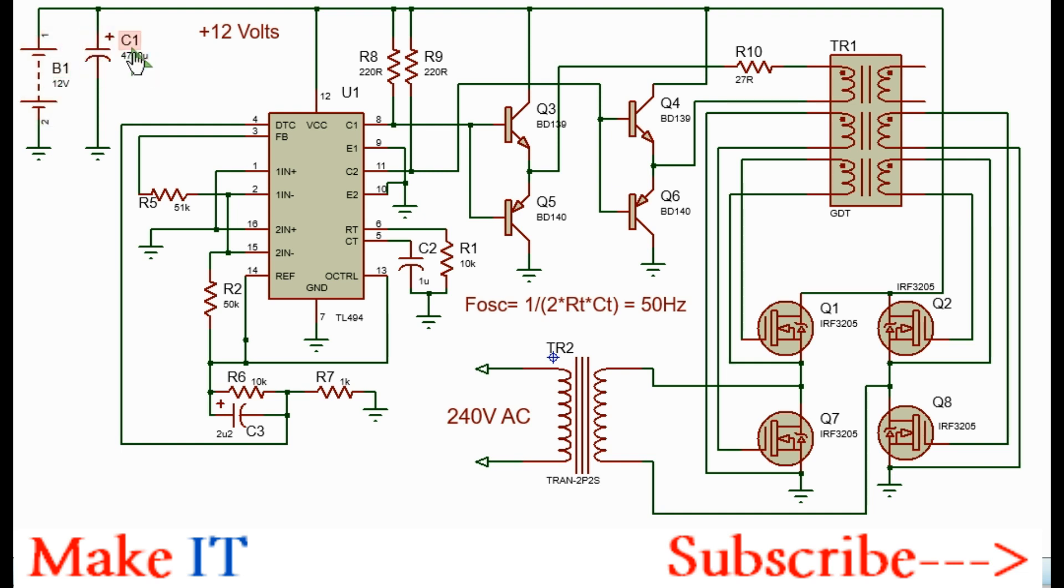At the inputs add a filter capacitor. The connections for the TL494 pulse width modulation IC are as shown here. Pins 12 and 7 are connected to VCC and ground respectively. Pin 13 to pin 14, pin 15 and 2, the inverting terminals of the amplifiers, are pulled up to the 5 volts generated by the reference pin 14.